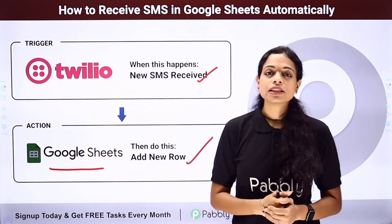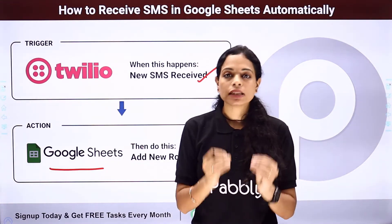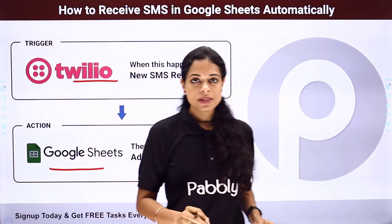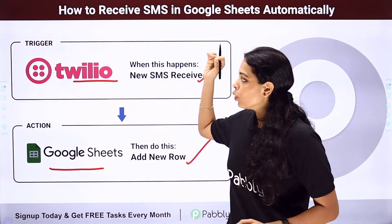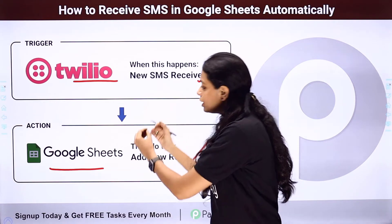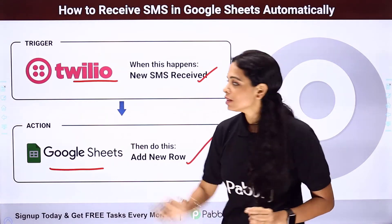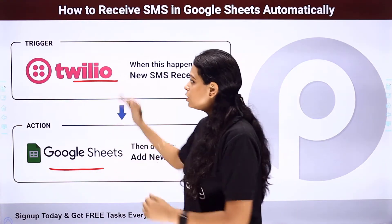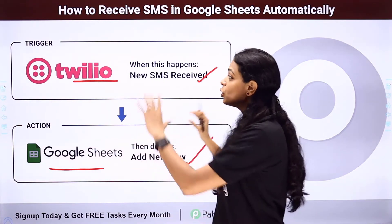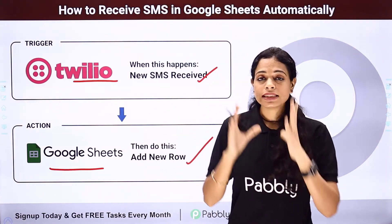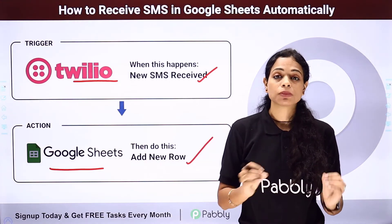Next, let's say you have to receive SMS in Google Sheets automatically. If you have a Twilio number on your website and you want all queries received on that number to be part of your Google Sheets, this can be done by integrating these two applications — Twilio as the trigger application and Google Sheets as the action application. You can automate this process so all SMS come directly into Google Sheets without doing it manually.